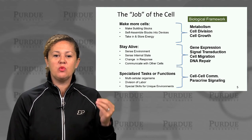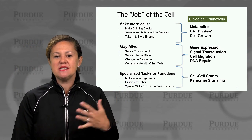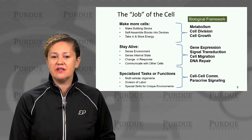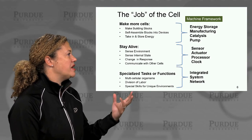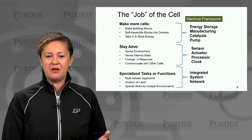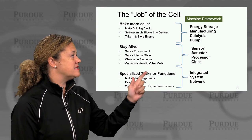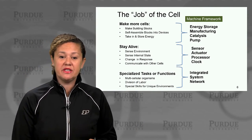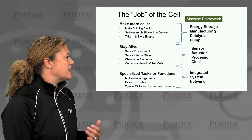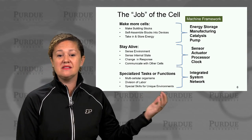From our traditional biological framework, we organize and study these things in terms of metabolism, cell division and growth, gene expression, signaling, cell migration, mobility, DNA repair, cell-cell communication, and paracrine signaling. But if we take those same topics and view them through a machine framework, we're really talking about energy storage, manufacturing of biomolecules, catalysis, and pumping — moving ions and biomolecules around. To stay alive, the cell has to be a sensor, an actuator, a processor, and often it needs to keep time and function as a clock. In multicellular organisms or bacterial communities, they need to function as an integrated system or network.